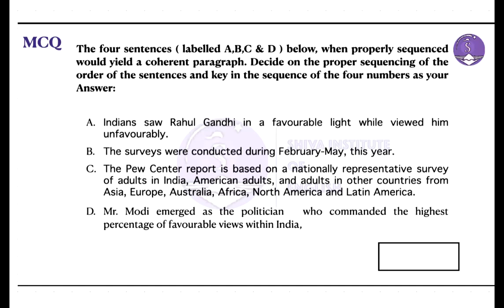Generally, jumble sentence or para-jumble questions come up with a typo-based question, where you have to type the answers. Like here, you can find a blank is given. A box is provided, and similarly in your actual exams you will also find a text line where you have to type the answers.